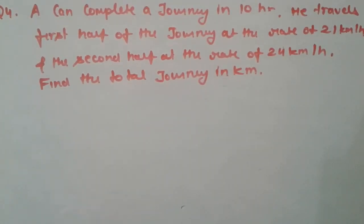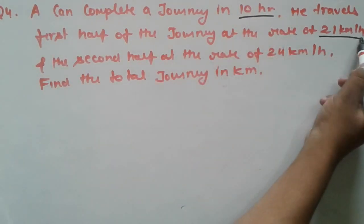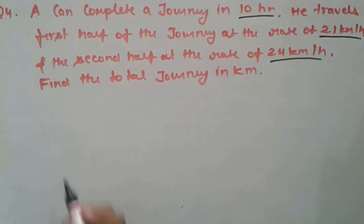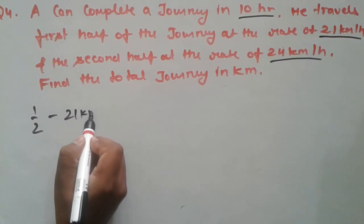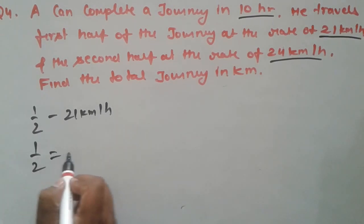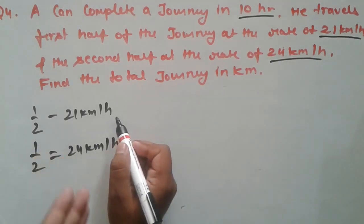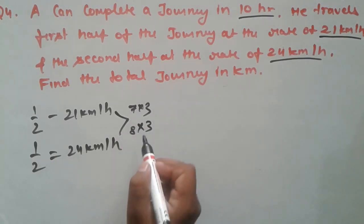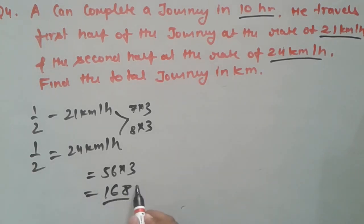Here is the fourth question. A can complete a journey in 10 hours. He travels the first half of the journey at a rate of 21 km per hour and the second half at a rate of 24 km per hour. Find the total journey in km. If we take the LCM of 21 and 24: LCM of 21 and 24 is 168. We assume 168 as the total distance.